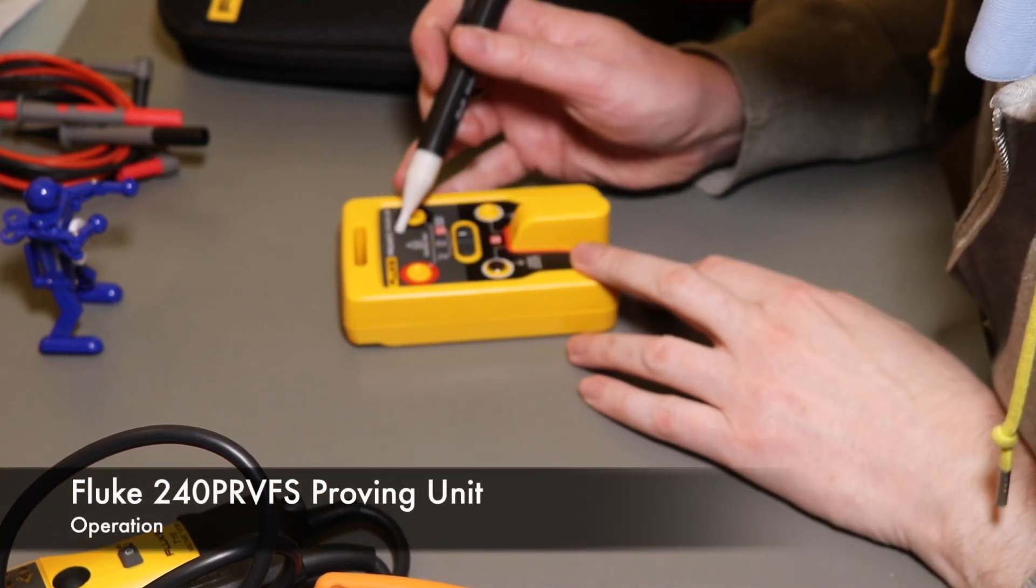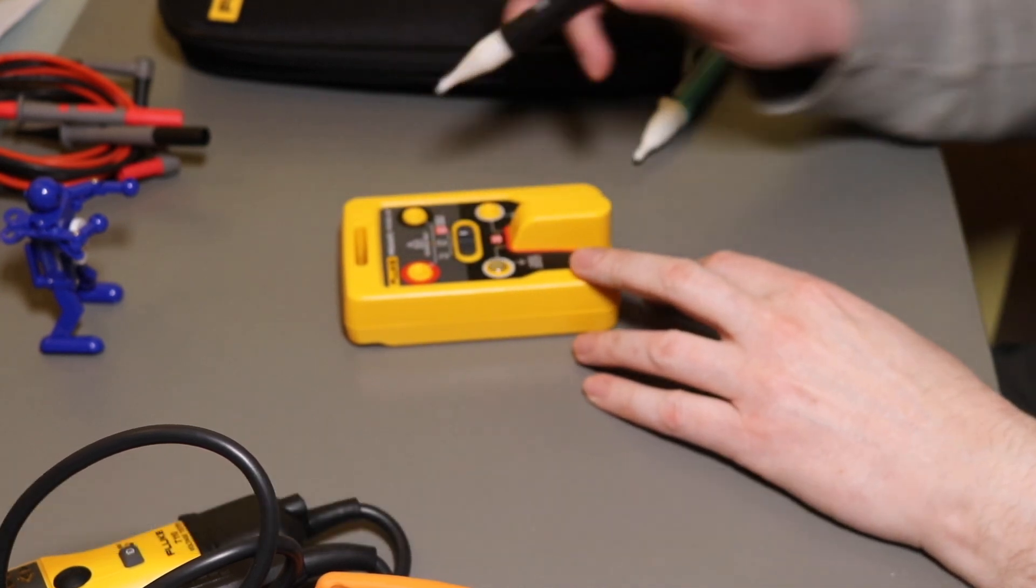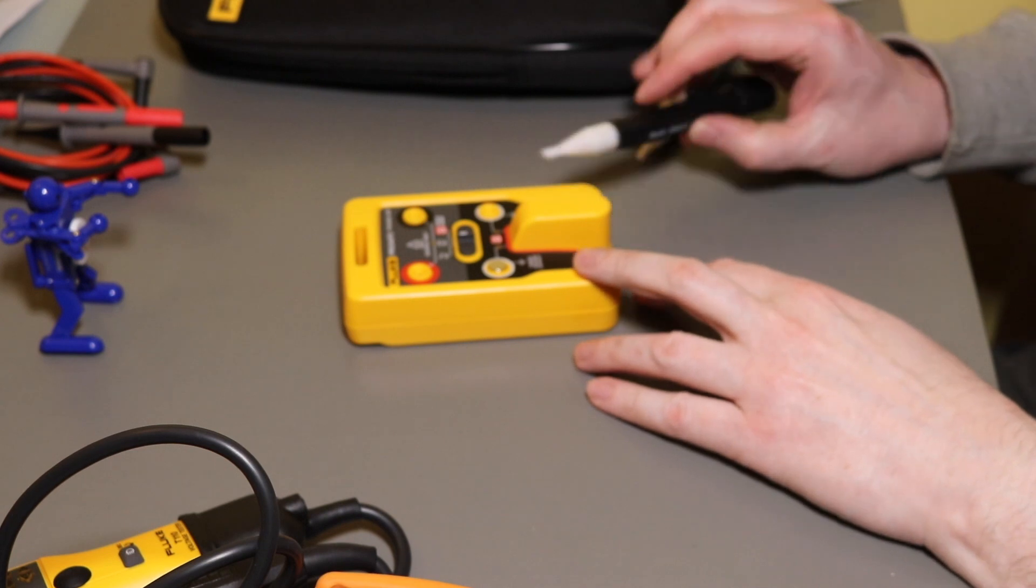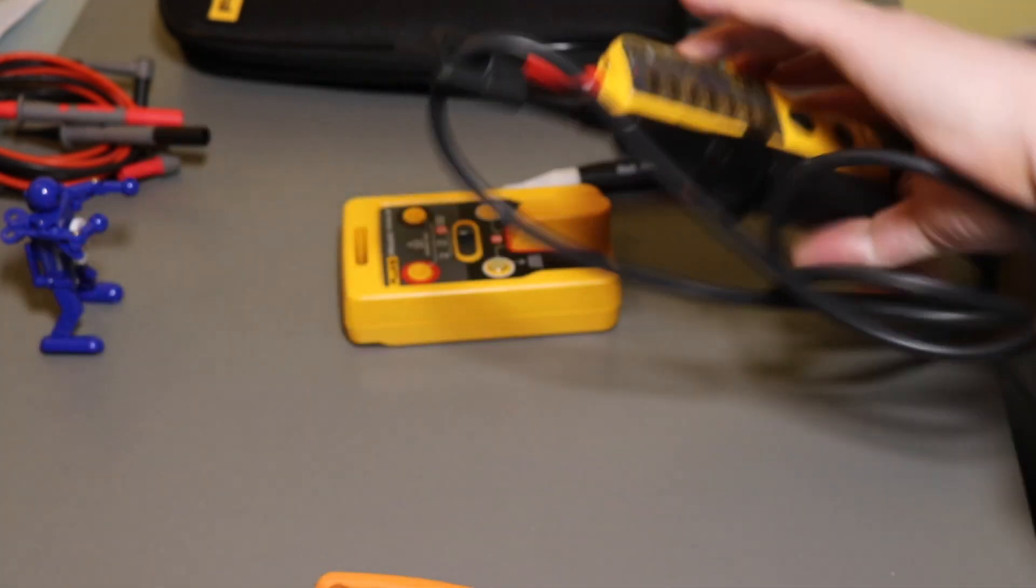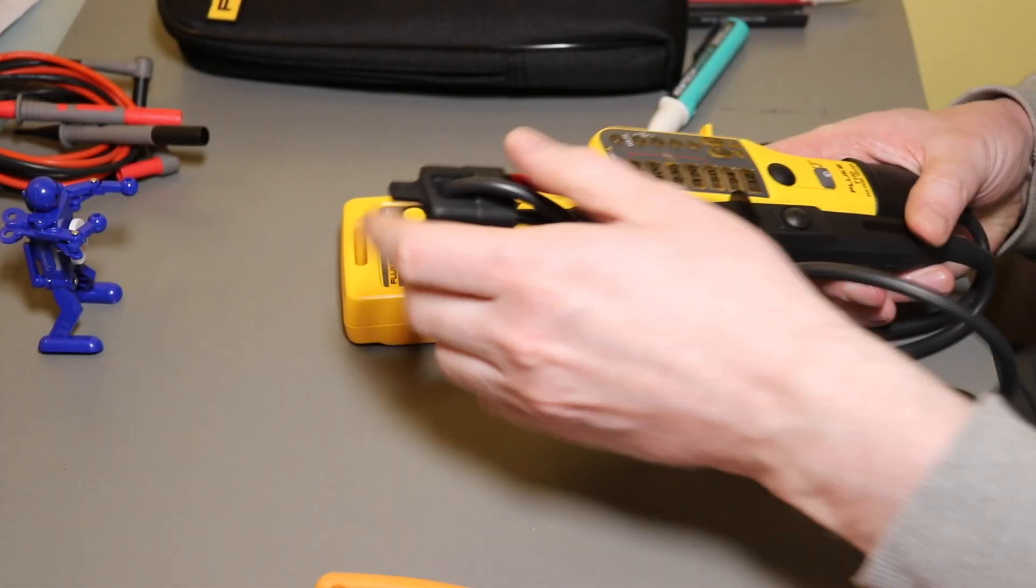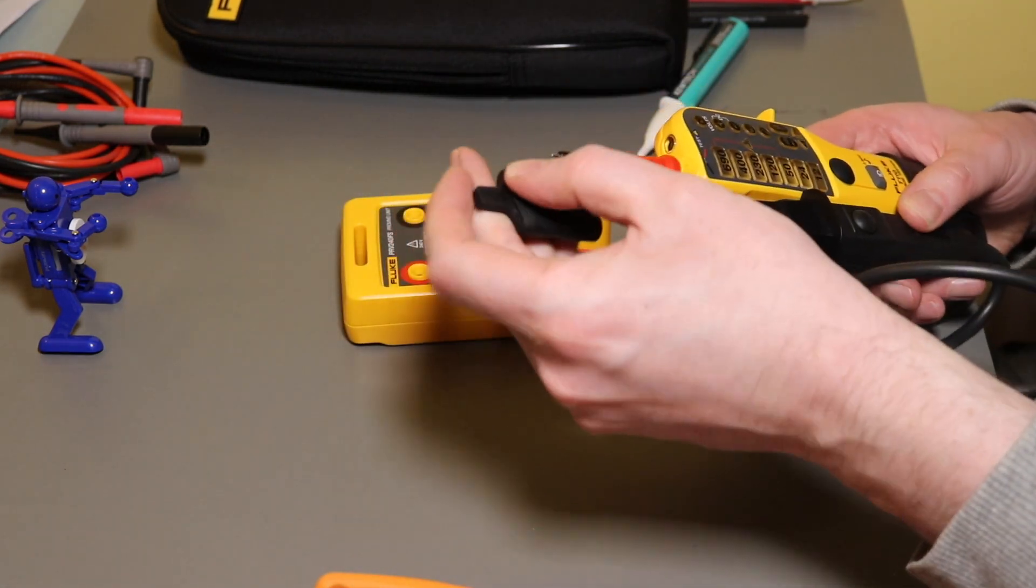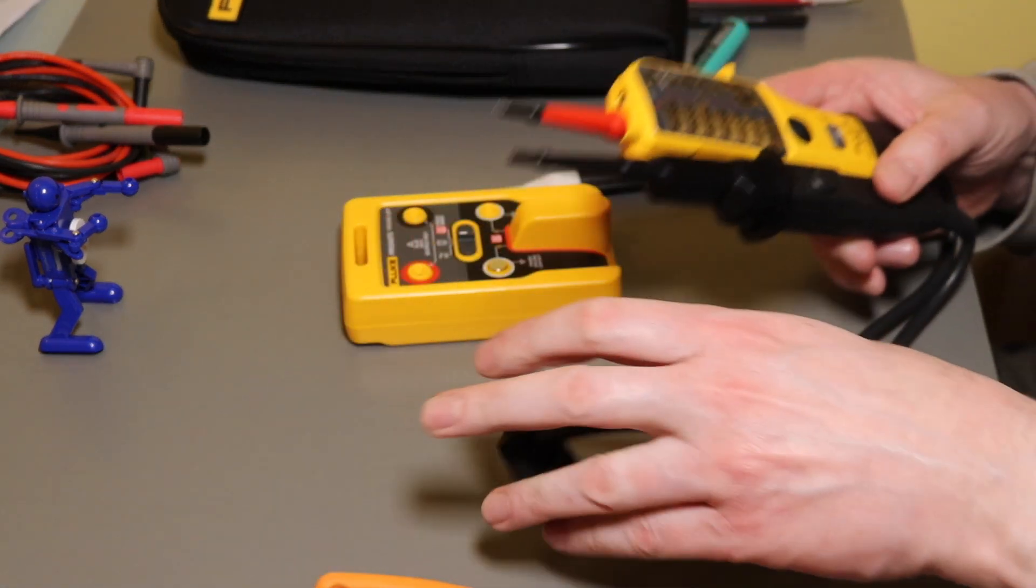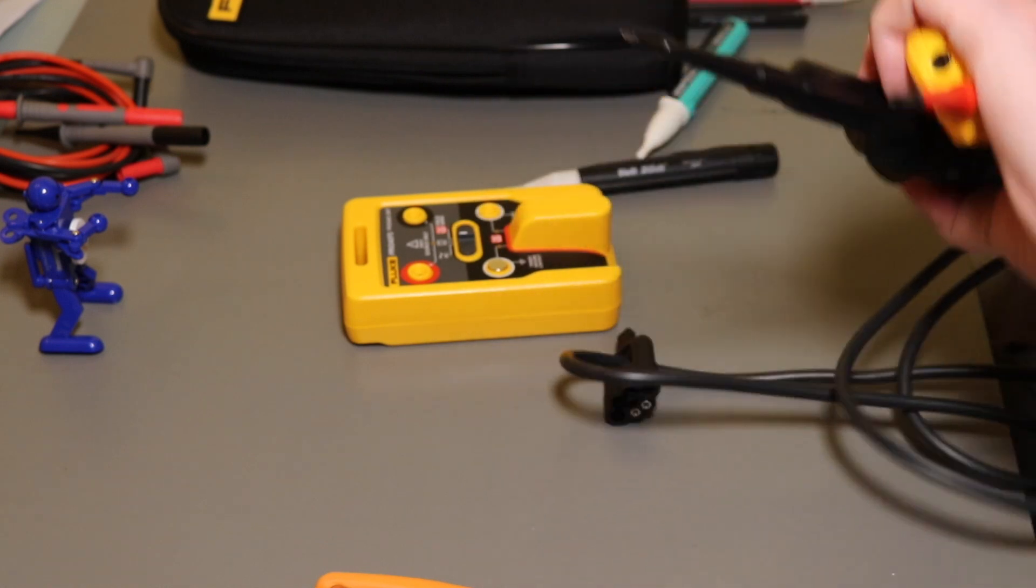So this is the Fluke PRV240FS Proving Unit that I've purchased with the T110 Voltage Tester and that's what will be my kit for testing for dead in future.